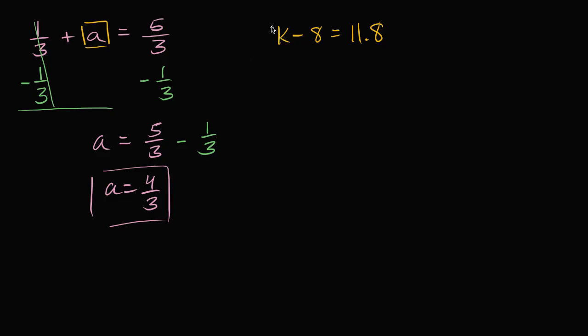So once again, I want to solve for k. I want to have just a k on the left-hand side. I don't want this subtracting this eight right over here. So in order to get rid of this eight, let's add eight on the left-hand side. And of course, if I do it on the left-hand side, I have to do it on the right-hand side as well. So we're going to add eight to both sides.